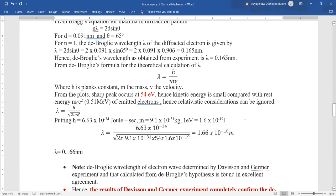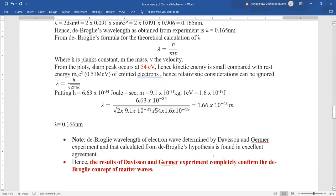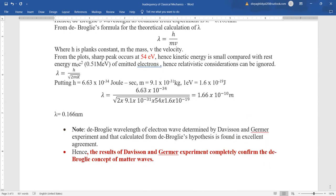Hence this experiment gives us the same value of lambda according to the concepts of de Broglie and the experiment. Therefore, de Broglie wavelength of electrons determined by Davison-Germa experiment and that calculated from de Broglie hypothesis are in full agreement. Hence, the results of Davison-Germa experiment completely confirm the de Broglie concept of matter waves. Thank you.